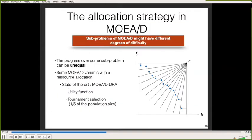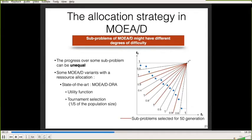For some time, a new component has appeared in MOEAD: the resource allocation strategy. We know that subproblems in MOEAD might have different degrees of difficulty, so progress over some subproblems can be unequal. In MOEAD, a system was introduced to dynamically allocate computational resources to more complicated subproblems using a utility function. Every 50 generations, a tournament selection based on the utility function chooses a sample of subproblems of size one-fifth of the population. Instead of visiting all subproblems during one generation, the algorithm visits only this sample.